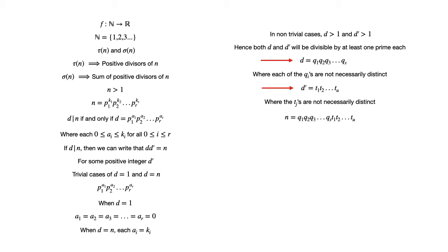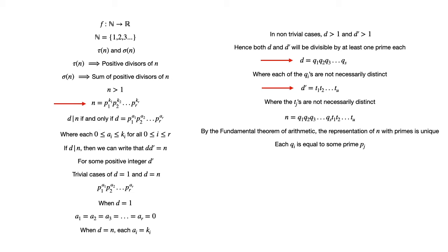In non-trivial cases, d > 1 and d' > 1, so both d and d' will be divisible by at least one prime each. Say d = q1 · q2 · q3 · ... · qs where the qi's are not necessarily distinct. Similarly, d' can be written as d' = t1 · t2 · ... · tu where the tj's are not necessarily distinct. Then n = q1 · q2 · ... · qs · t1 · t2 · ... · tu. By the fundamental theorem of arithmetic, the representation of n with primes is unique, so each qi equals some prime pj present in the canonical factorization of n. Thus, grouping like primes in the factorization of d, we have d = p1^a1 · p2^a2 · ... · pr^ar where some ai are allowed to be 0.